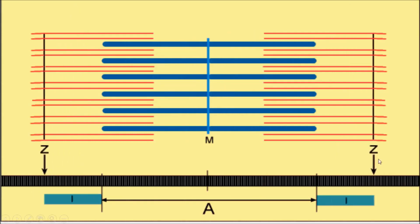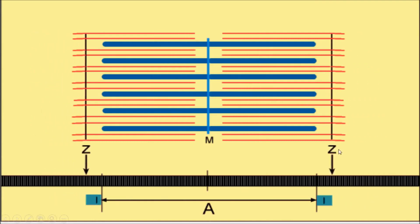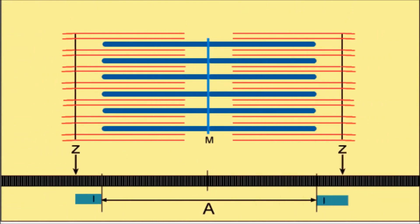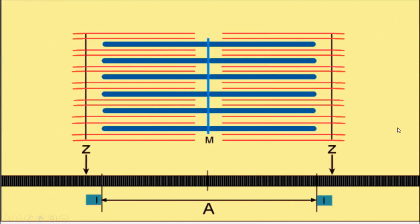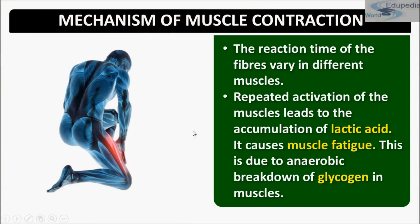In the animation, these are the two Z lines, the red ones are the actins, and the blue ones are the myosin. The I band (isotropic) and the A band (anisotropic) are visible. The actins are being overlapped and the two Z lines are pulled inward; the isotropic bands are shortened. The reaction time of fibers varies in different muscles. Repeated activation of the muscle leads to accumulation of lactic acid, causing muscle fatigue, due to anaerobic breakdown of glycogen in the muscles.